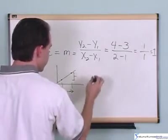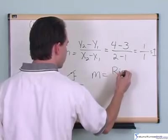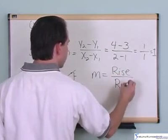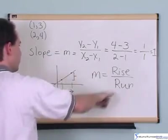Another convenient way to remember this formula: M equals rise over run. How fast does the line go up (rise)? How fast does it go over (run)?